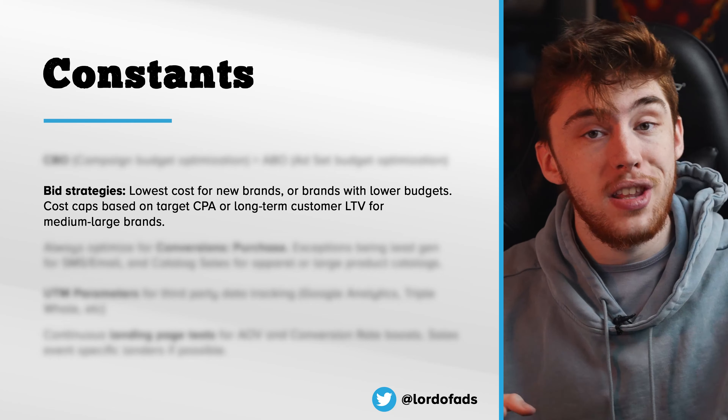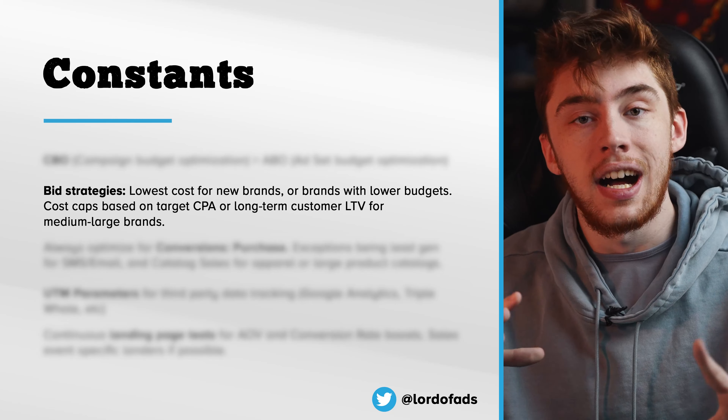Number one is using campaign budget optimization over ad set budget optimization — CBO versus ABO. This is a hotly debated topic, but over the past couple of years Facebook has put a ton of effort, resources, and time into developing their algorithm. CBO is way better than ABO for consistent results with medium to high budgets. For anybody spending over a hundred dollars a day, I would highly suggest using CBO and those algorithmic benefits.